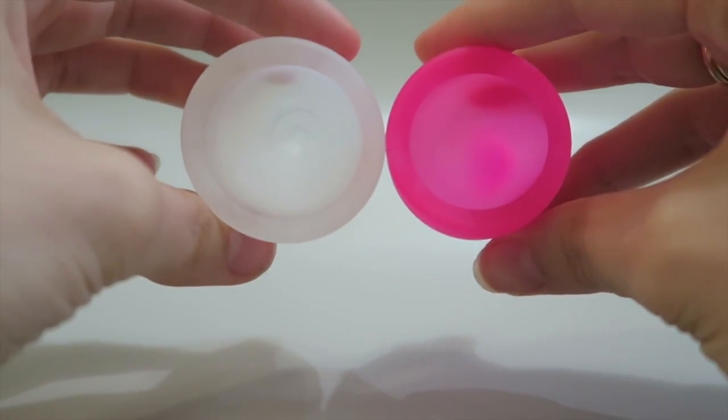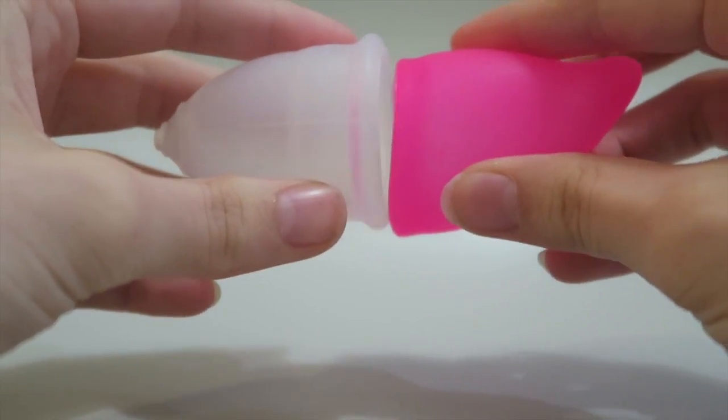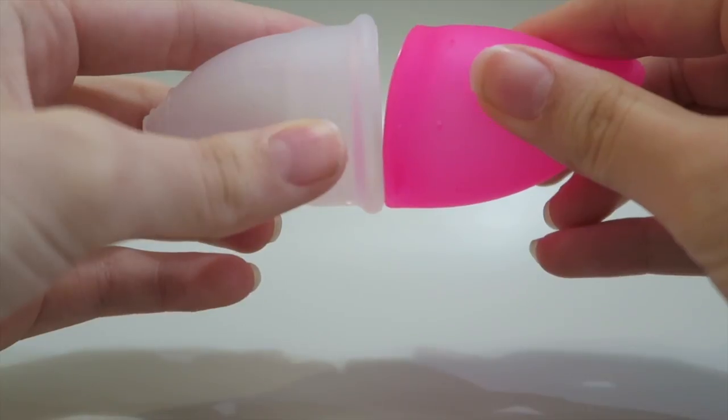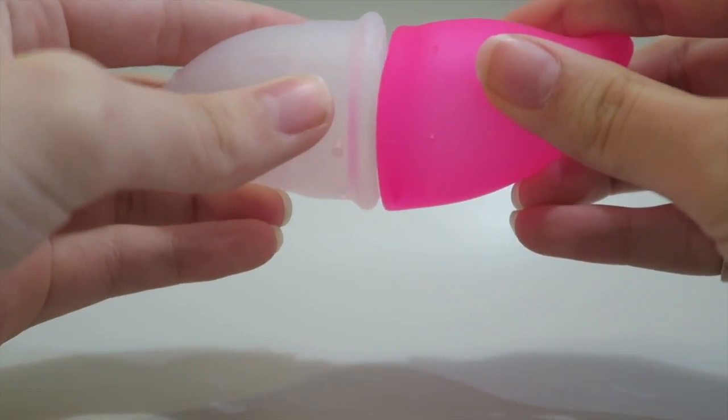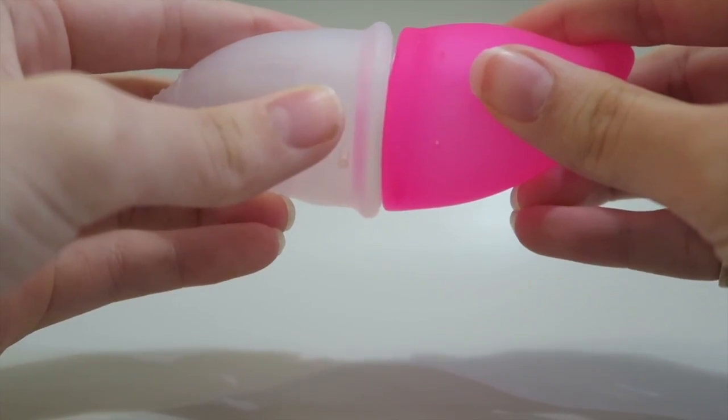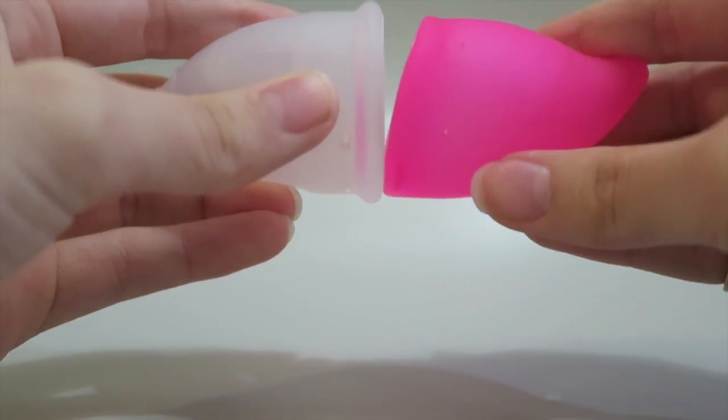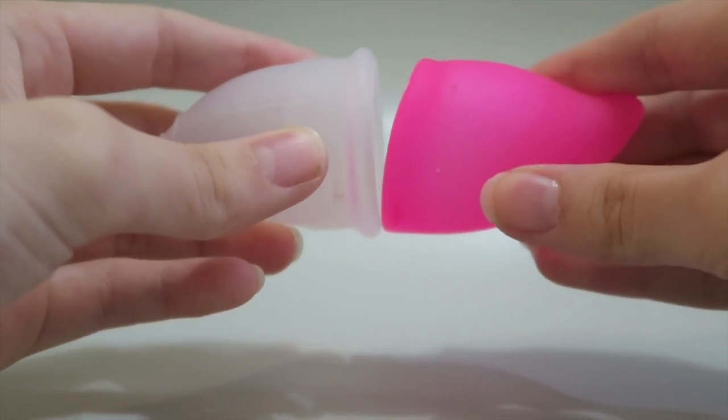Rim-wise they're pretty similar in diameter. It's kind of hard to line them up because of the Fun Cup's slanted rim, but you can kind of see there, they're very similar. I'd say there's pretty much nothing in it, but obviously this one's straight, this one's curved.